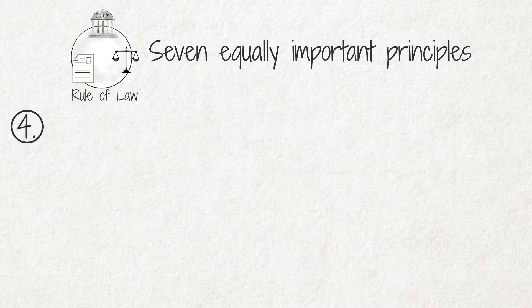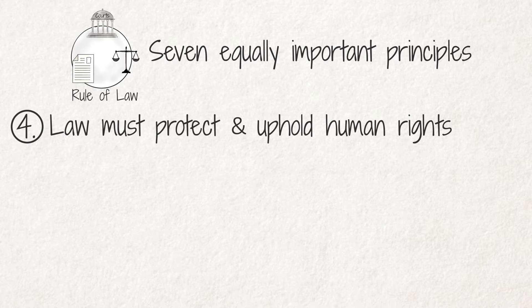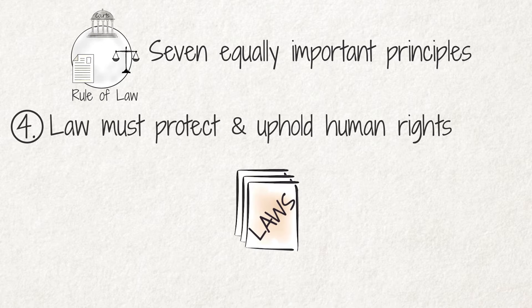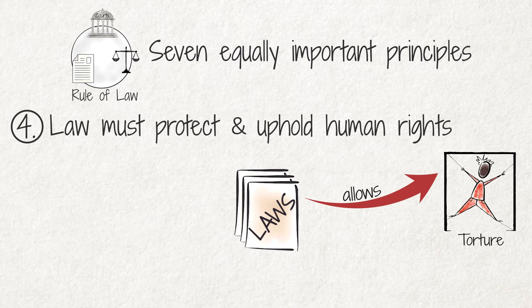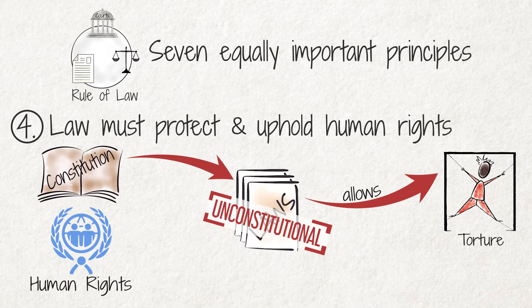Principle 4 is that the laws and decisions must protect and uphold human rights. It is all good and well if there is a legal basis for the government's decisions, and the law is clear and accessible. But if that law, for example, allows torture, it is in conflict with human rights and therefore unconstitutional.